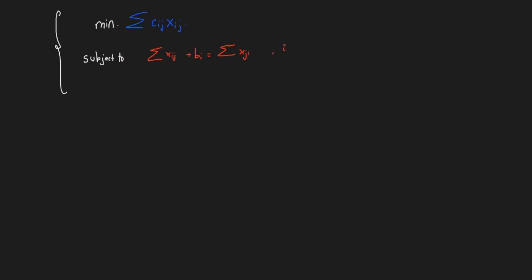This holds for each node, from one to n — three in our case. We also assume a bounded problem, limiting each xij between zero and some upper bound uij. Since the cost and constraints are linear in the xij variables, this is a linear program. There is a dedicated lecture in my convex optimization series, lecture five, covering LP solvers including the simplex method by Dantzig.